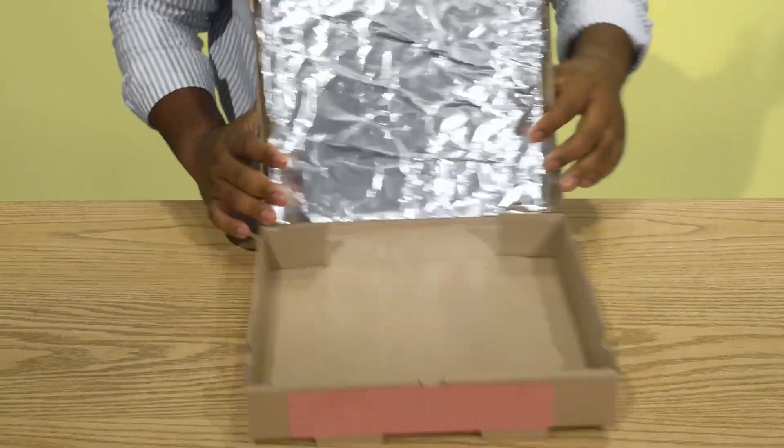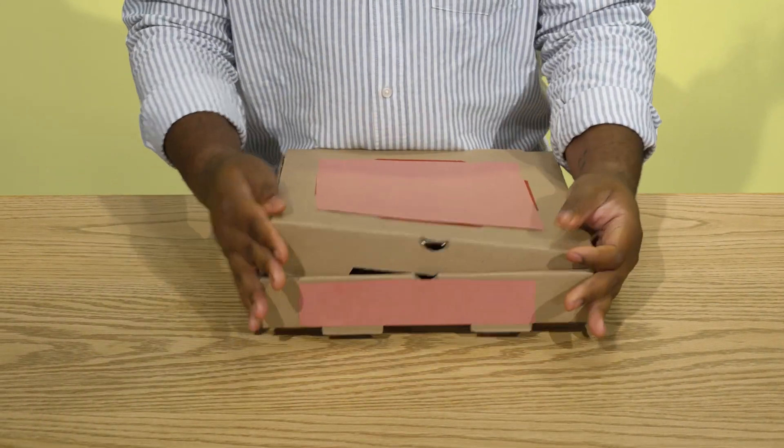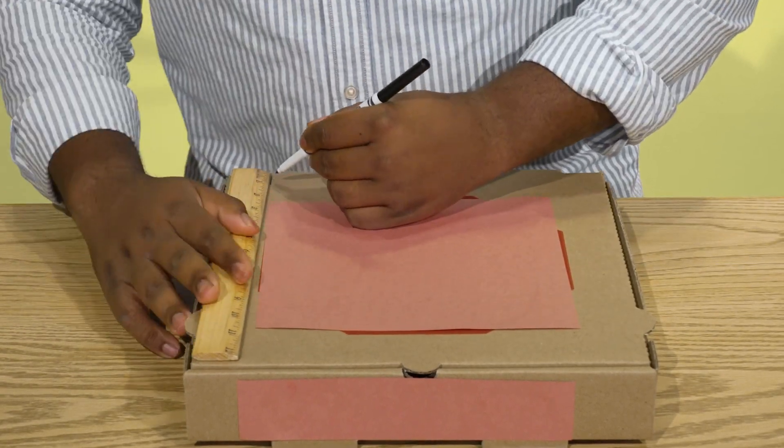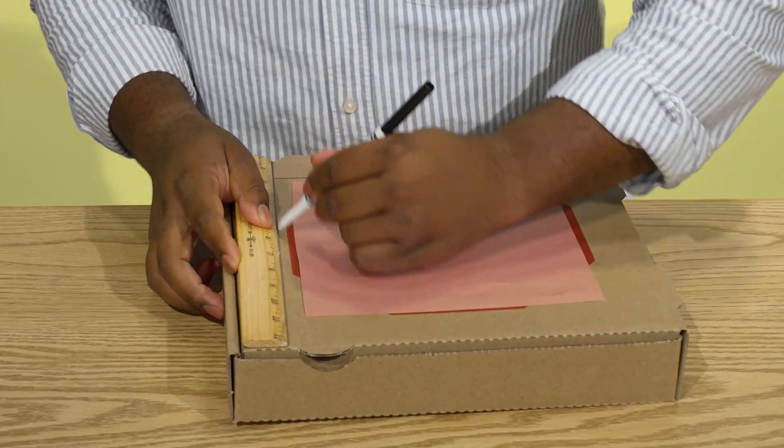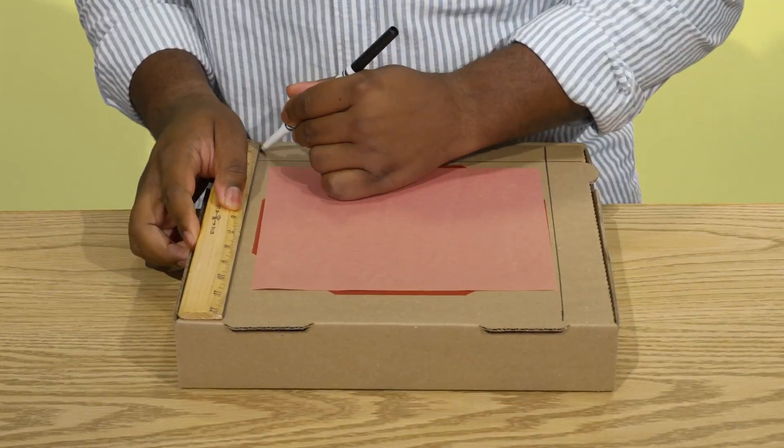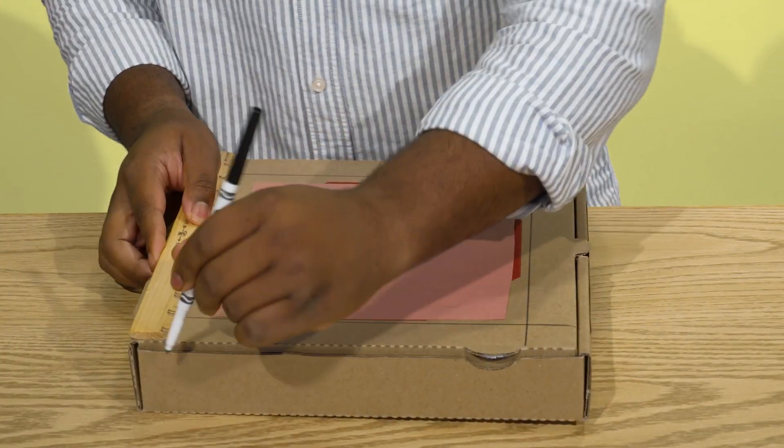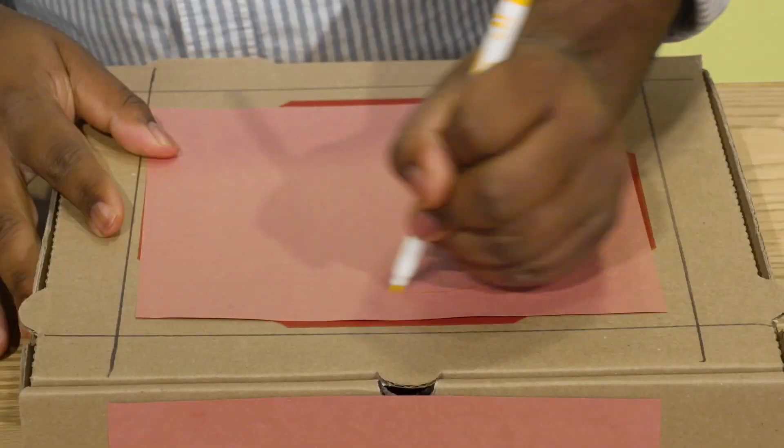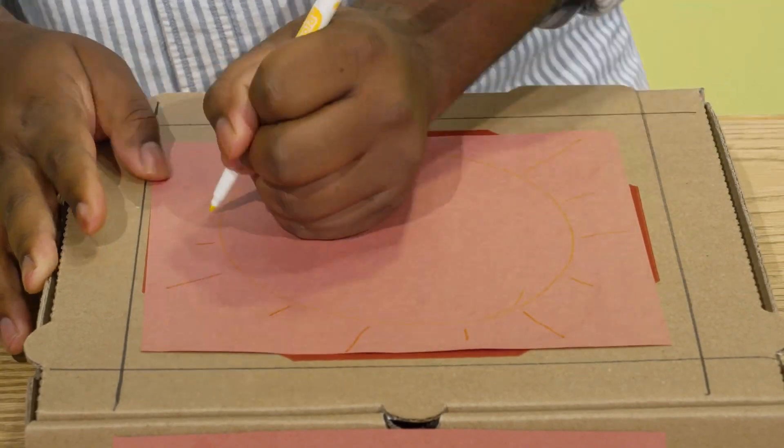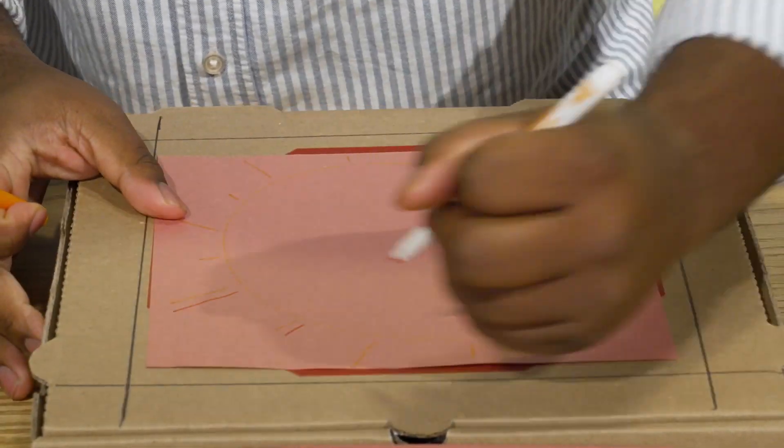Close the lid of the pizza box. Use a ruler and crayon or marker to draw a square, leaving about one inch around all four edges. If your pizza box allows it, decorate the top of the box to really make it your own.